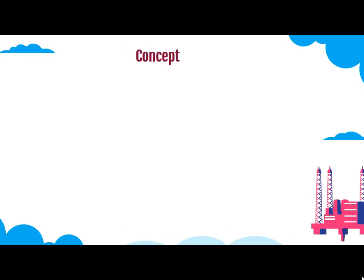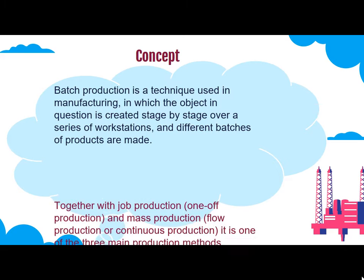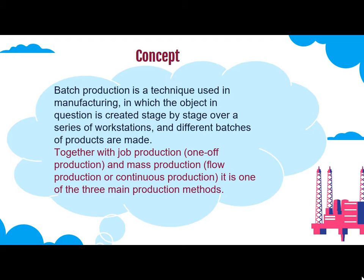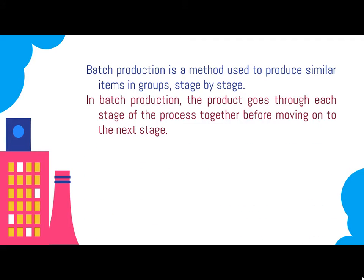Batch production. We will start with the concept. Batch production is a technique used in manufacturing in which the object in question is created stage by stage over a series of workstations, and different batches of products are made. Together with job production and mass production, it is one of the three main production methods. Batch production is a method used to produce similar items in groups, stage by stage, with each product going through each stage of the process together before moving on to the next stage.